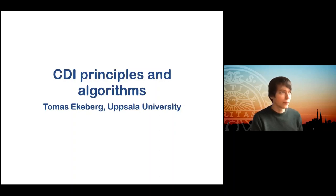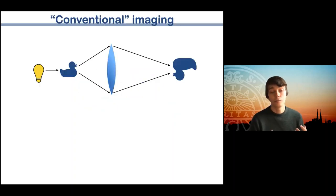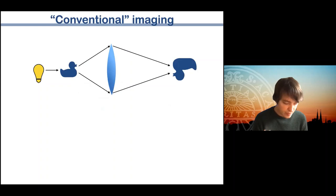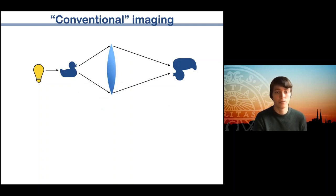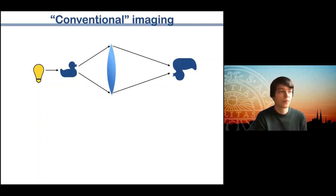Let's start by talking about coherent diffractive imaging by putting it into context with what I call conventional imaging. Here is the most simple explanation of an optical microscope: you have a light source, an object, and a lens. Light diffracts from the object and the lens brings it together to a perfect image in the image plane, where you can see a hopefully larger version of the duck.